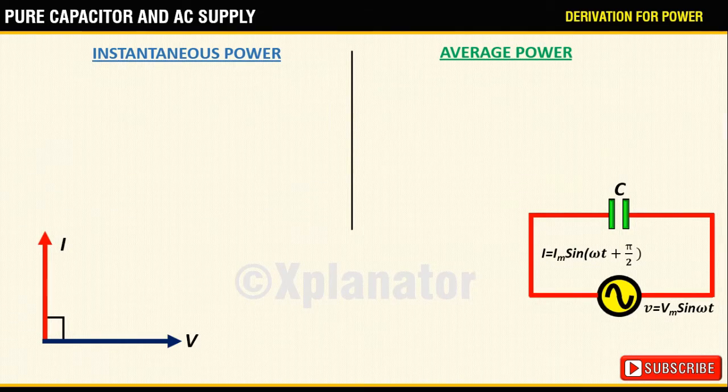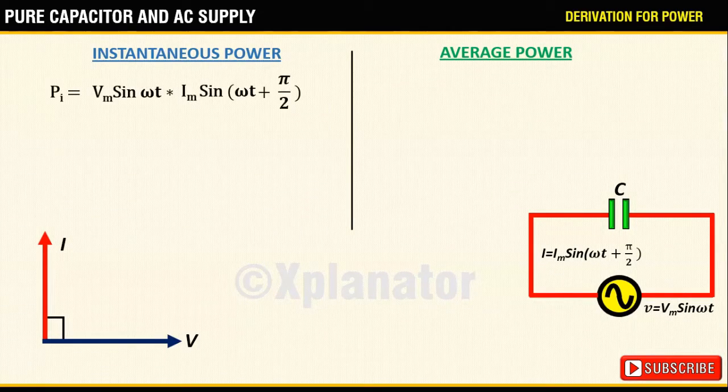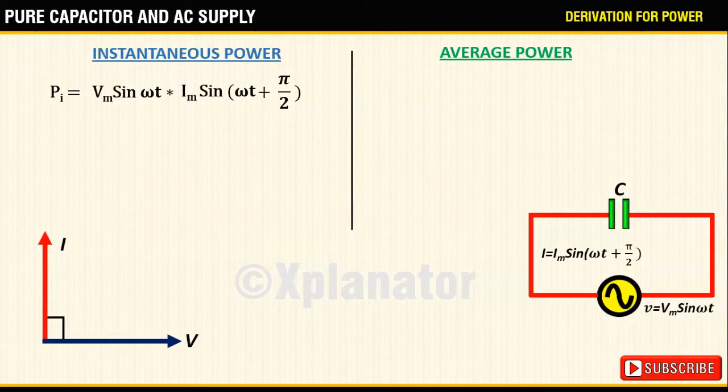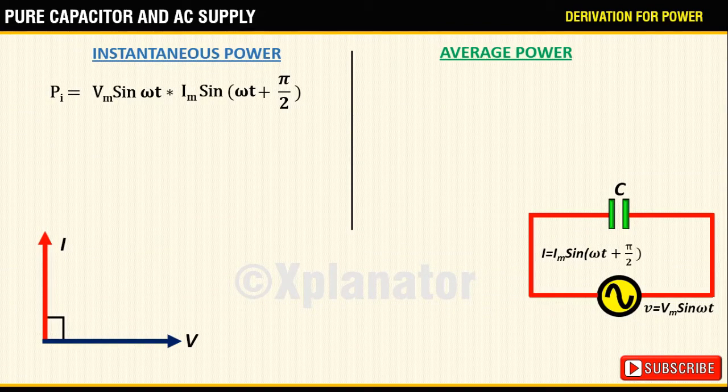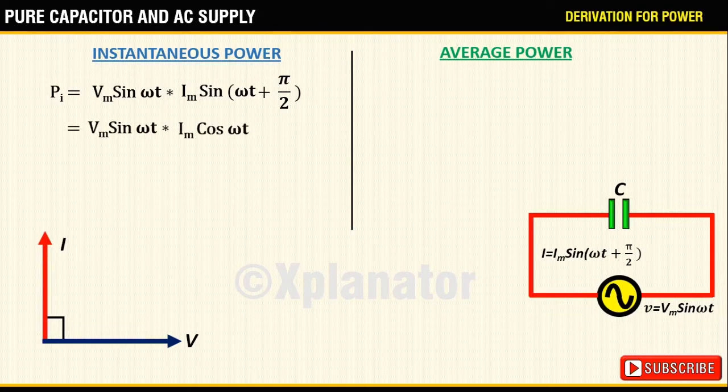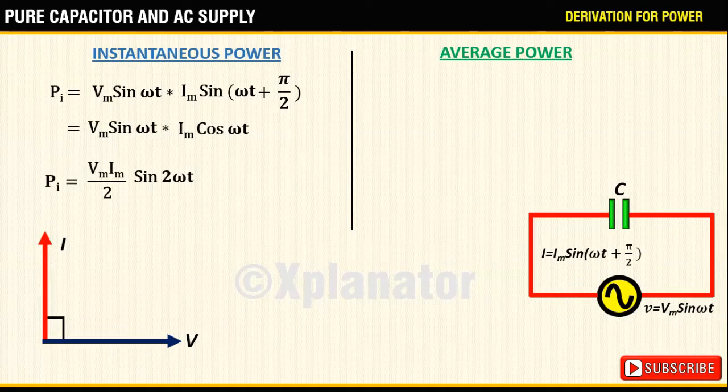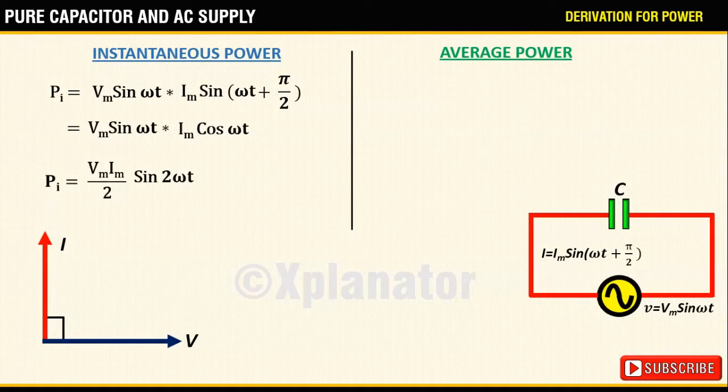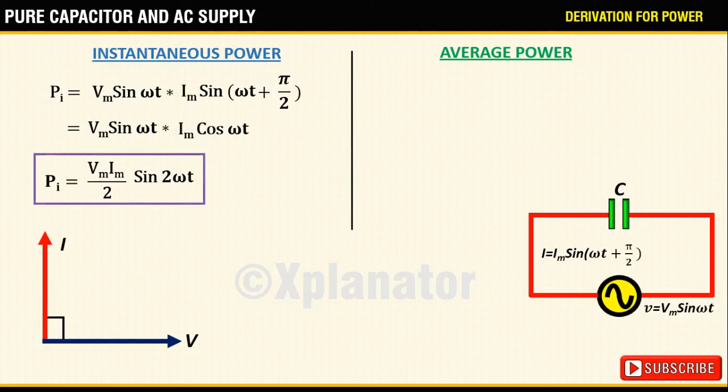For instantaneous power, p equals voltage into current. Substituting the values and simplifying, we get p equal to Vm Im sin 2 omega t upon 2.